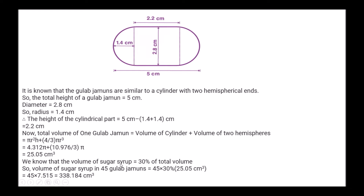The volume of sugar syrup is 30% of the total volume. Volume of sugar syrup in 45 gulab jamuns = 45 × 30% of 25.05, which gives 45 × 7.515 = 338.184 centimeter cube.